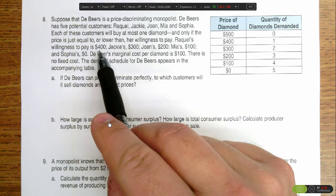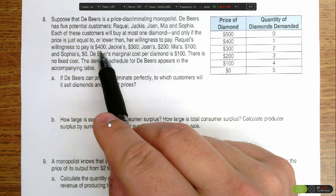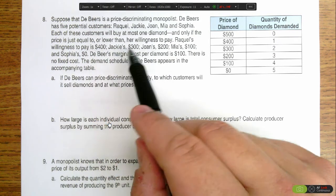Raquel was willing to pay $400, she does pay $400, so her surplus is zero. Same for Jackie, Joan, and Mia.